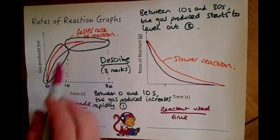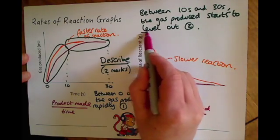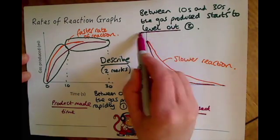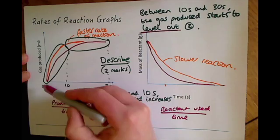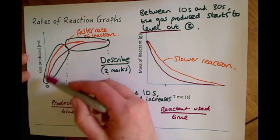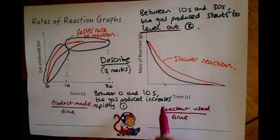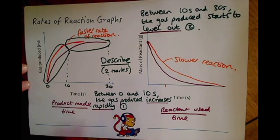If your graph starts to flatten off, 'level out' is a good description of that shape. And if something is increasing quickly, 'increases rapidly' are the key words to use for describing those sections of the graph.